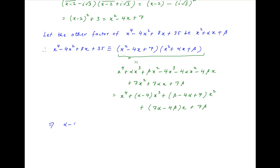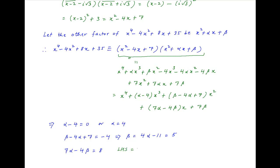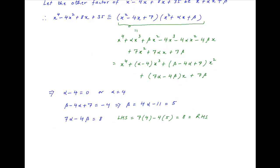From the x³ coefficient: α - 4 = 0, which implies α = 4. From the x² coefficient: β - 4α + 7 = -4, and using α = 4 we get β = 4α - 11 = 5. Equating the coefficients of x on both sides: 7α - 4β = 8, and using α = 4 and β = 5 the left-hand side equals 7(4) - 4(5) = 8, which equals the right-hand side. This equation is therefore verified.